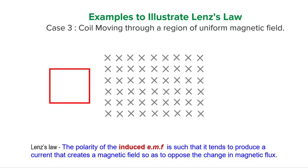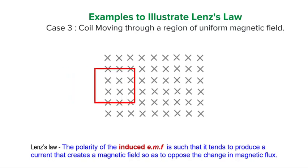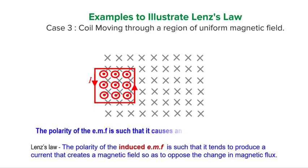Let us consider the case when the coil is moving into the field. As it enters, the coil experiences an increase in magnetic flux linkage. By Lenz's Law, the polarity of the EMF will be such as to set up a current to oppose this increase in flux linkage. Therefore, the magnetic field set up by the induced current should be in the opposite direction to that of the external field, pointing out of this plane. Using the right-hand grip rule, we can tell that an anti-clockwise current will be induced in the coil. We say that the direction or polarity of the EMF is such that it causes an anti-clockwise current in the coil.